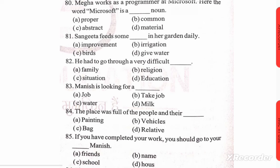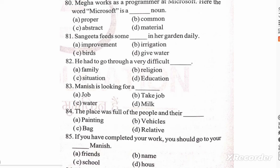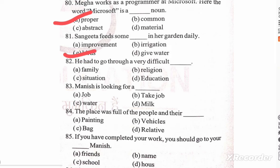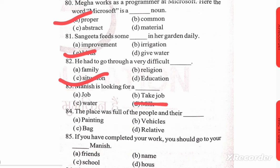Mega works as a programmer at Microsoft — the word Microsoft is a blank space noun. Options: proper, common, abstract, material. Correct option is A — proper. Sangeetha feeds some blank space in her garden daily. Options: improvement, irrigation, birds, give water. Option C — birds — is correct. He had to go through a very difficult blank space. Options: child, family, religion, situation, education. Correct option is C — situation. Manish is looking for a job — take job, water, milk. Option A — job — is correct.